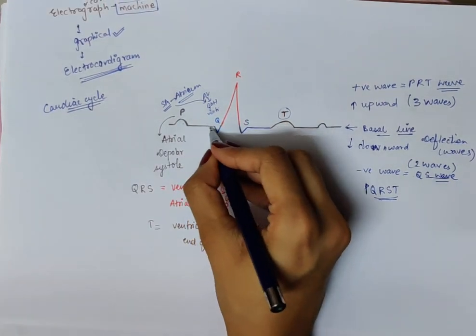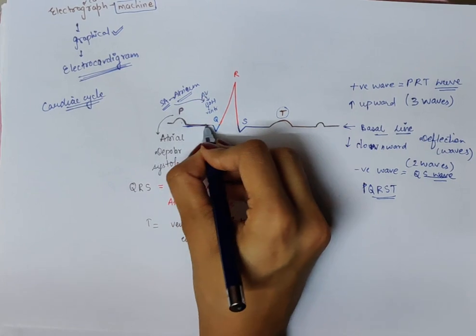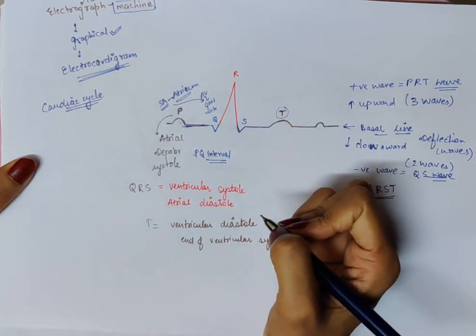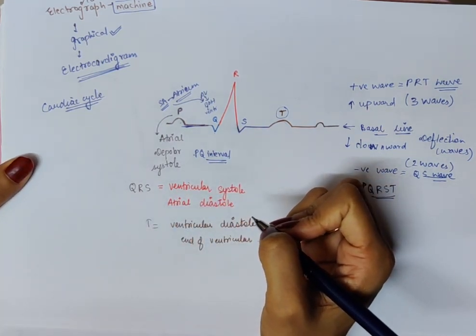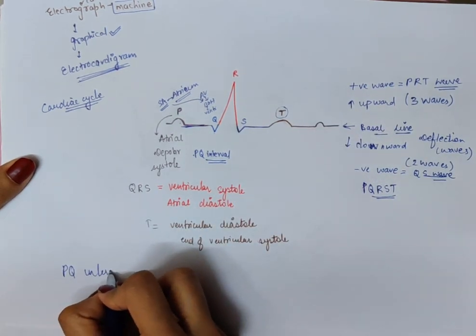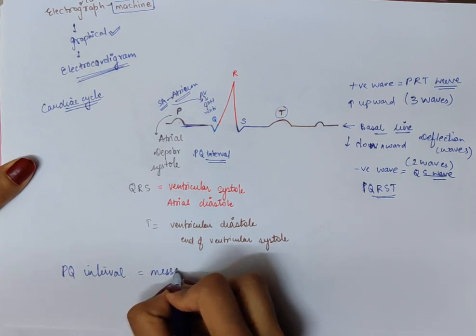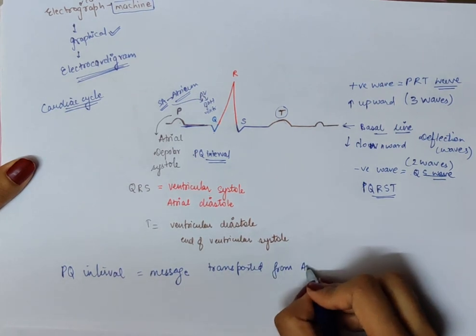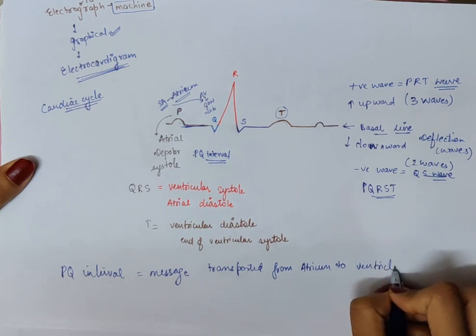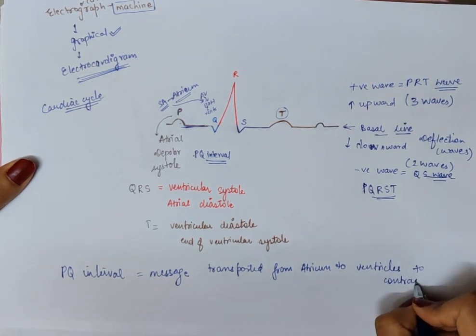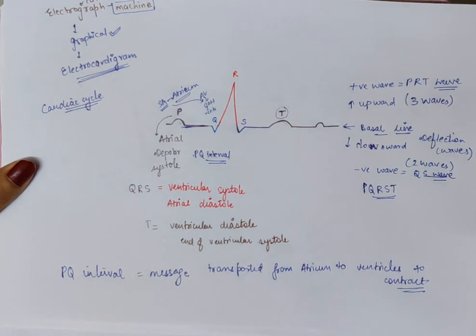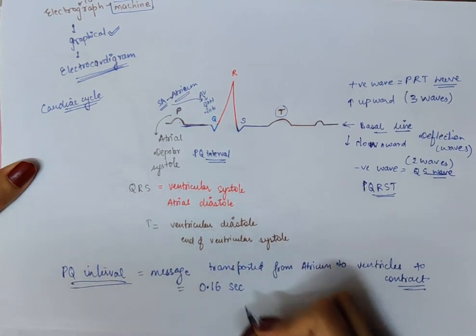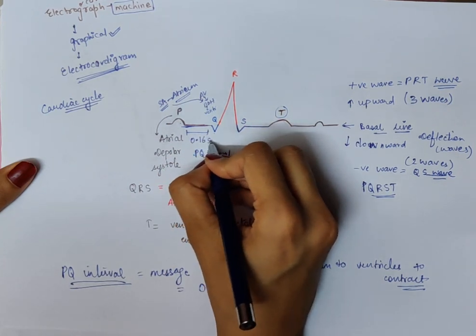You can also see some intervals. There is a P-Q interval. During the P-Q interval, the message is transported from the atrium to the ventricles instructing them to contract. This P-Q interval lasts for 0.16 seconds.